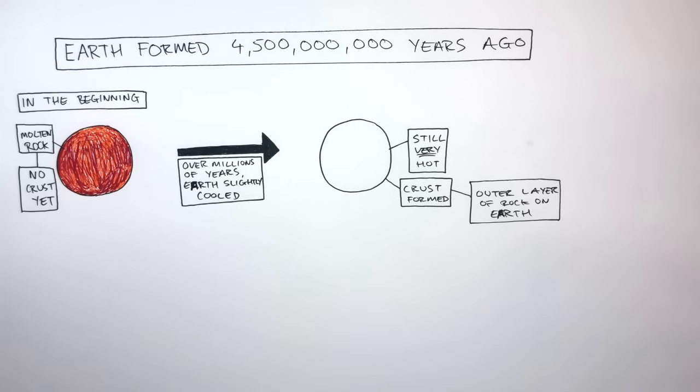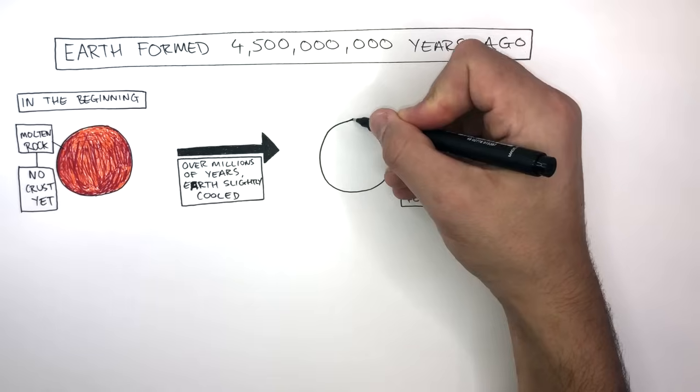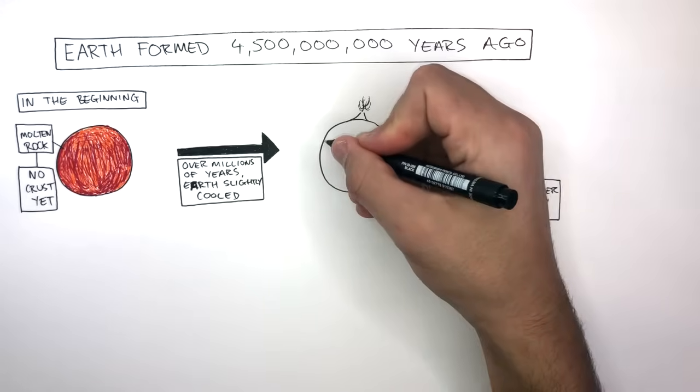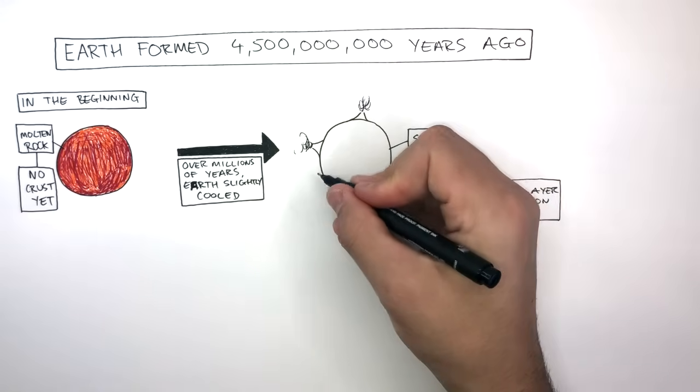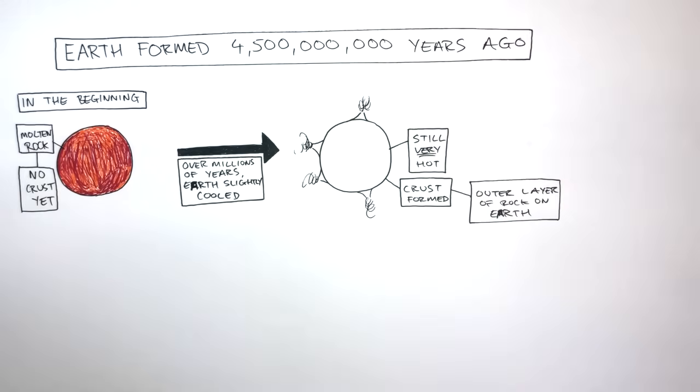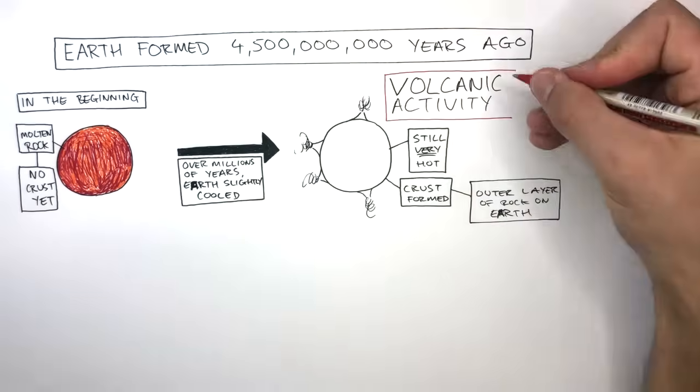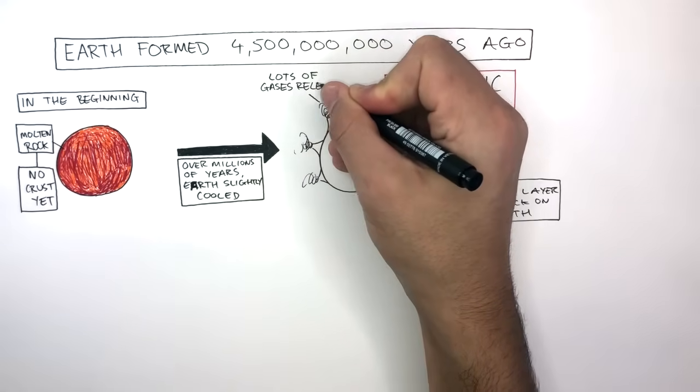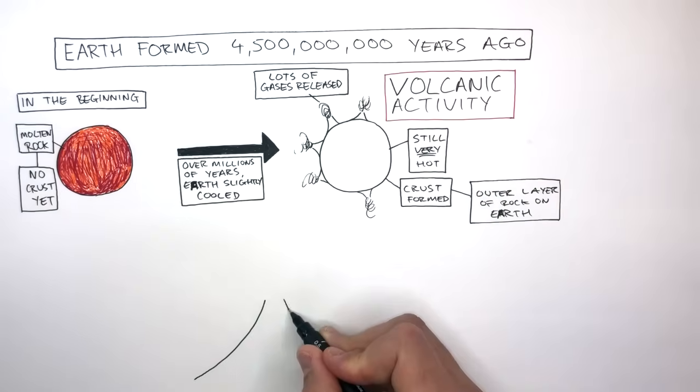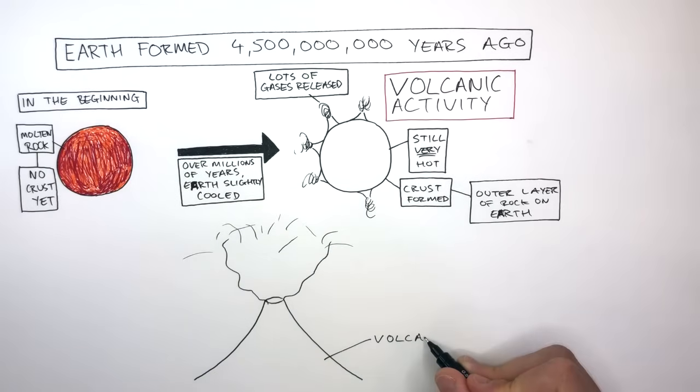4.5 billion years ago, there would have been a lot of volcanic eruptions. These volcanoes would have been spread everywhere around the world. There would have been so much volcanic activity causing a lot of gases to be released. Here I'm drawing a simple diagram of a volcano erupting.